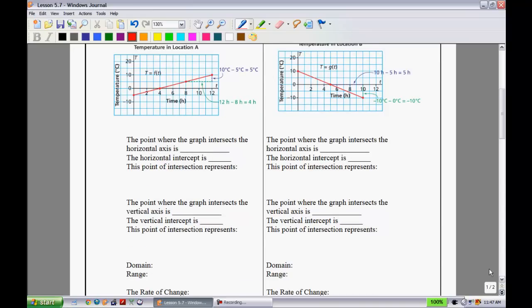Let's try and answer these questions. The point where the graph intersects the horizontal axis is—we see it intercepts right here at (4, 0). So this would be the ordered pair (4, 0). The horizontal intercept is at 4. What does this mean? This means at 4 hours the temperature is zero degrees.